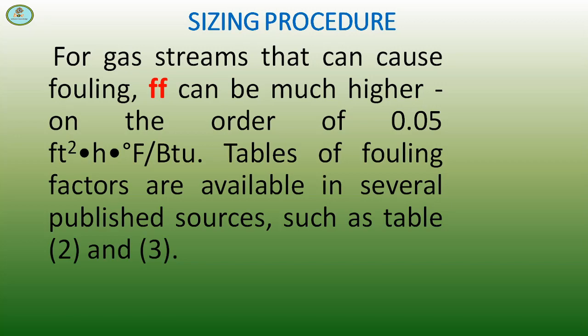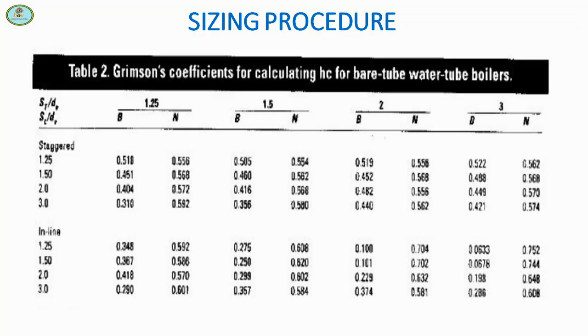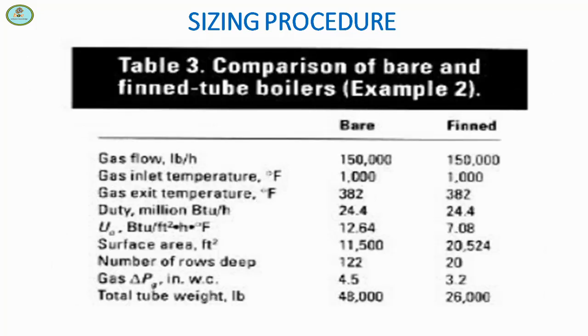This is table 2, Grimson's coefficient for calculating Hc for bare tube water tube boilers. This is table 4, comparison of bare end finned tube performance.